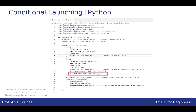The TurtleSim node will always be executed regardless of the value of start_mover. However, the mover node will not be executed if start_mover is equal to false — and by default it is set to false. There is IfCondition and also UnlessCondition. UnlessCondition is just the opposite: if the value is false, it will be executed; if it is true, it will not be executed. The logic I want to establish is that if start_mover is true, the mover node will be executed.